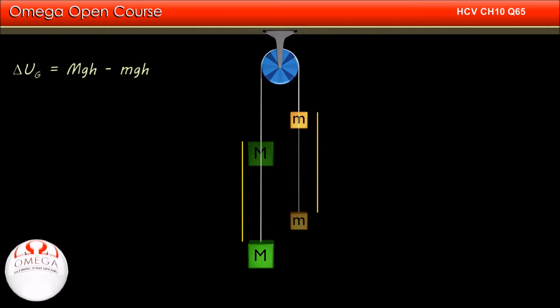The net decrease in gravitational potential energy of the system is 0.4 × 9.8 × 0.5 minus 0.2 × 9.8 × 0.5. Simplifying, we get change in gravitational potential energy is equal to 0.98 joules.